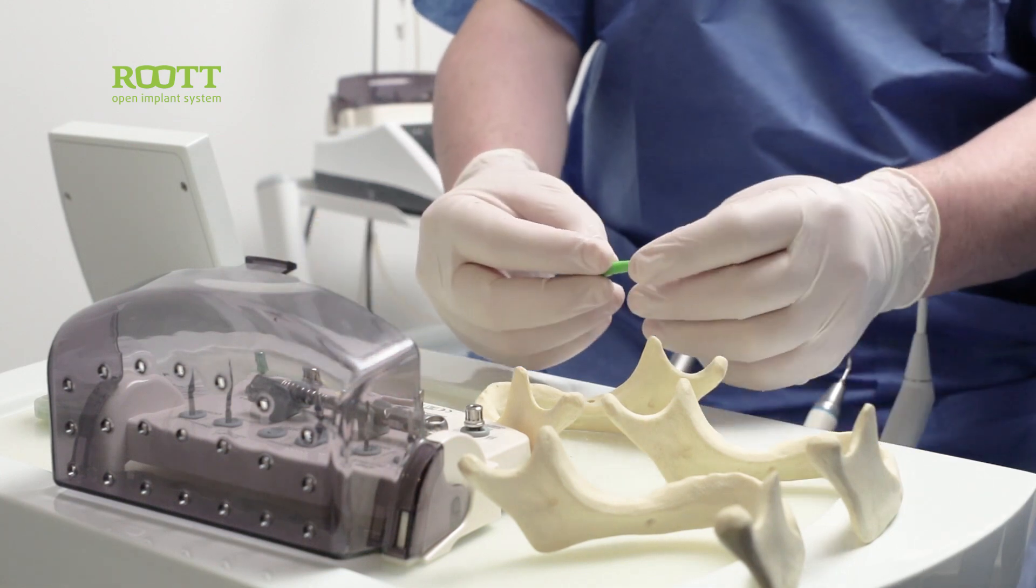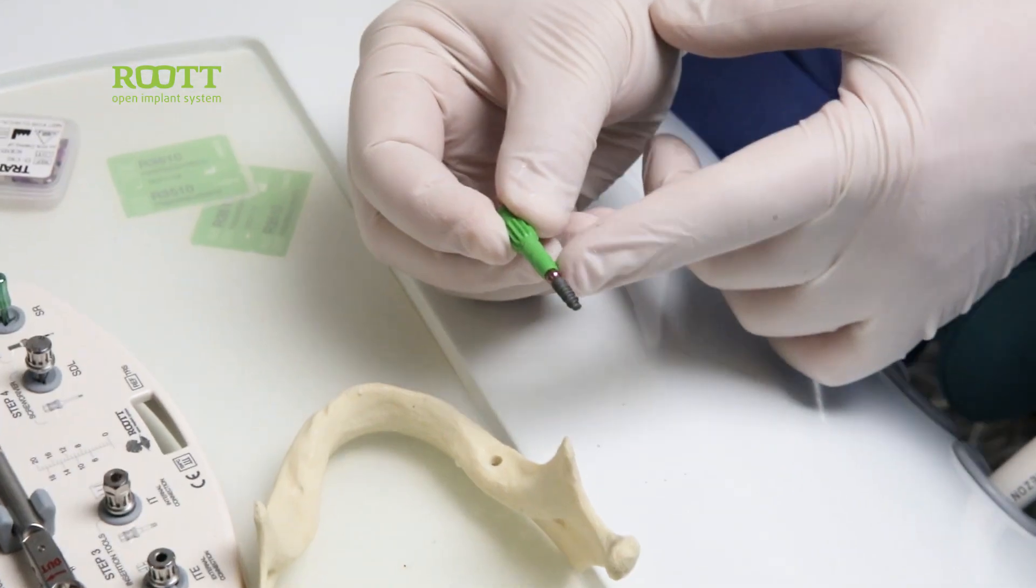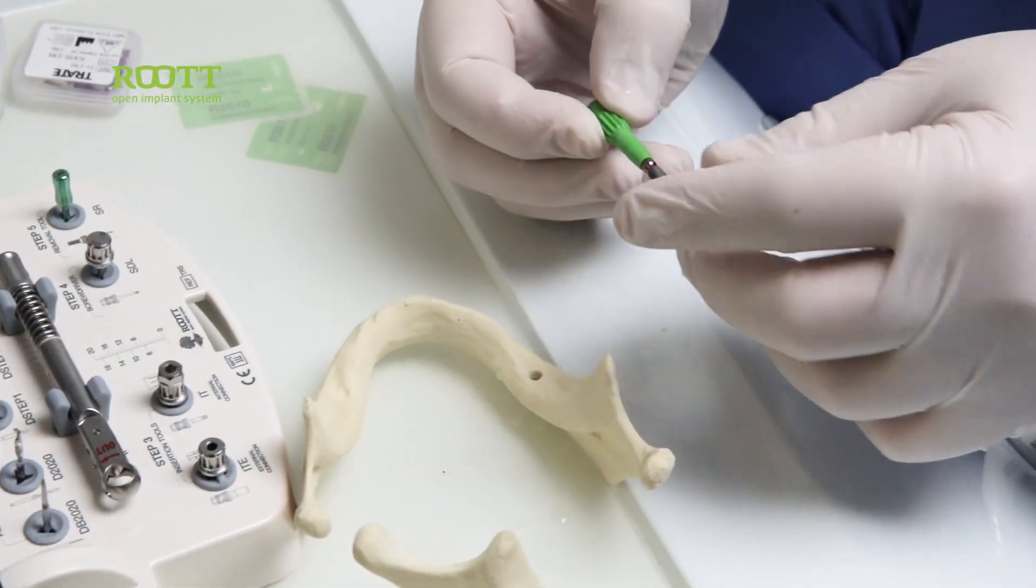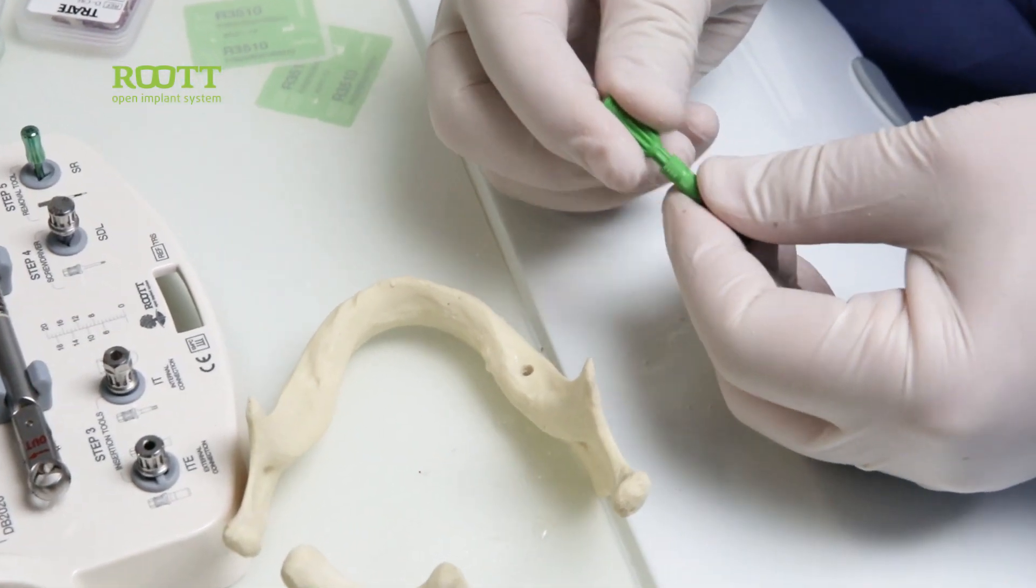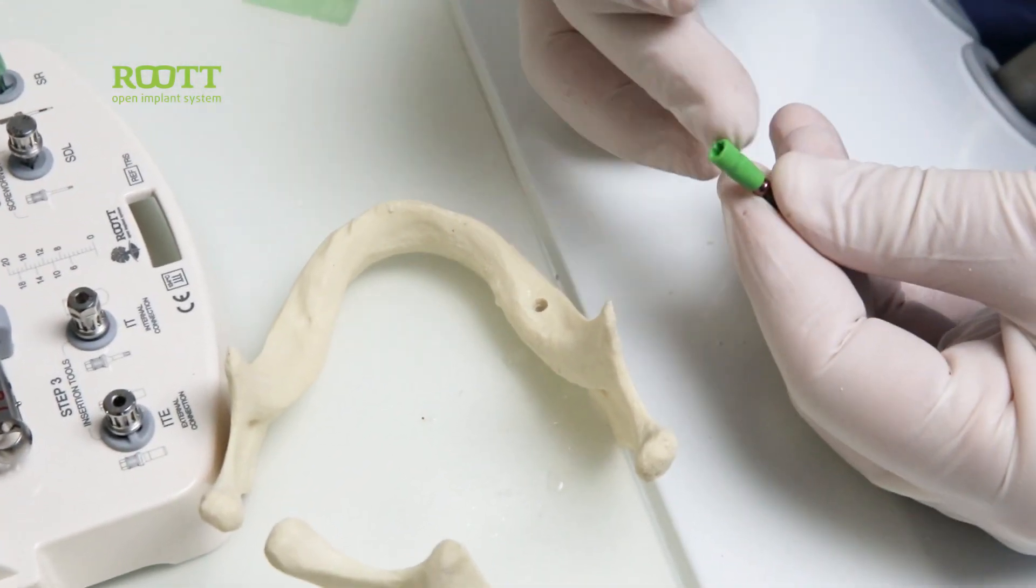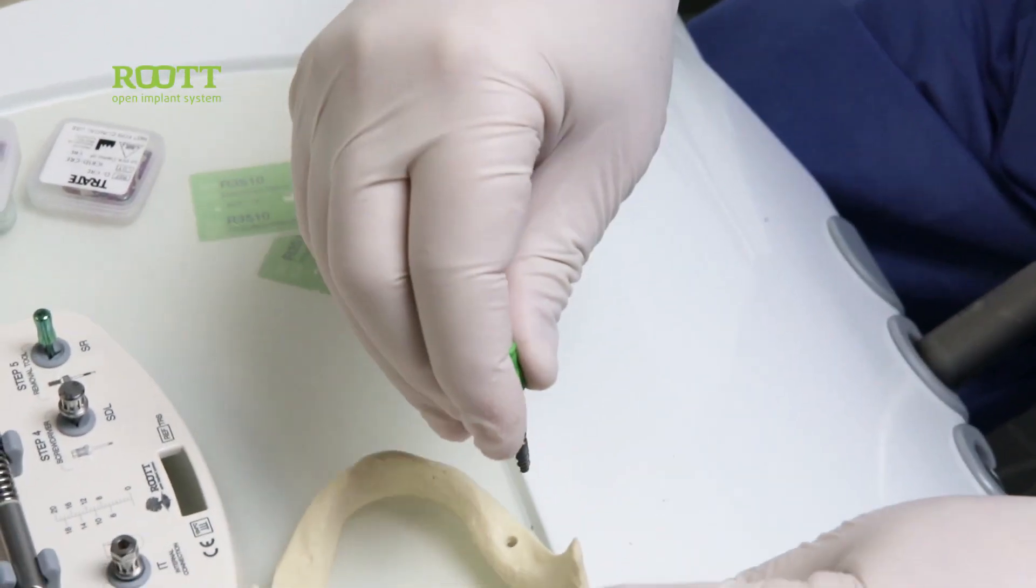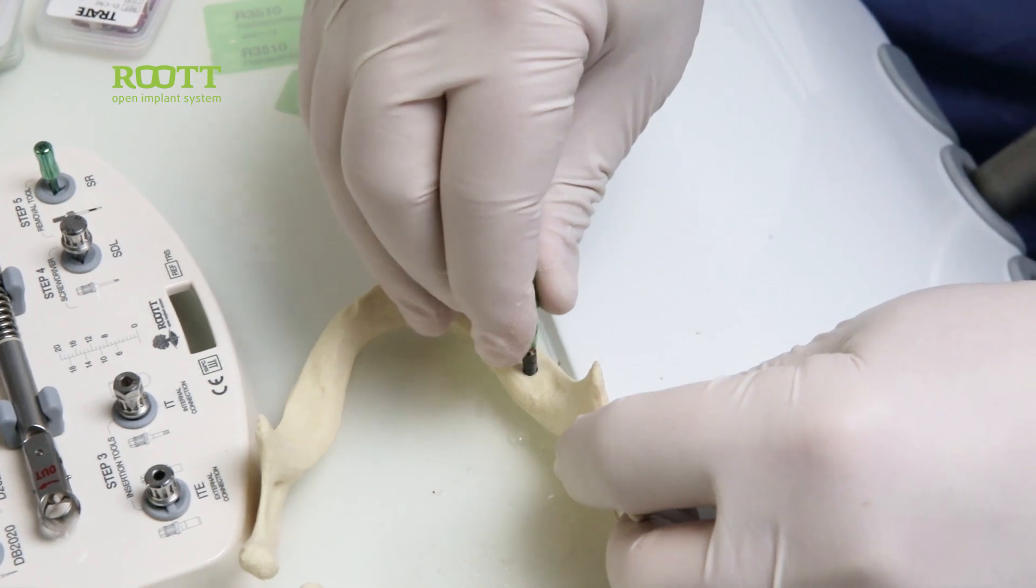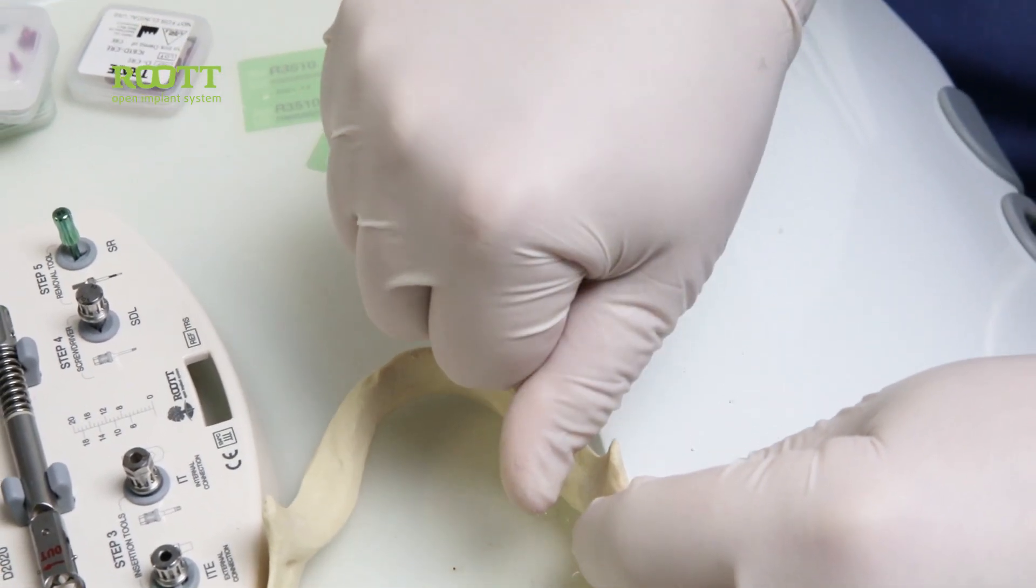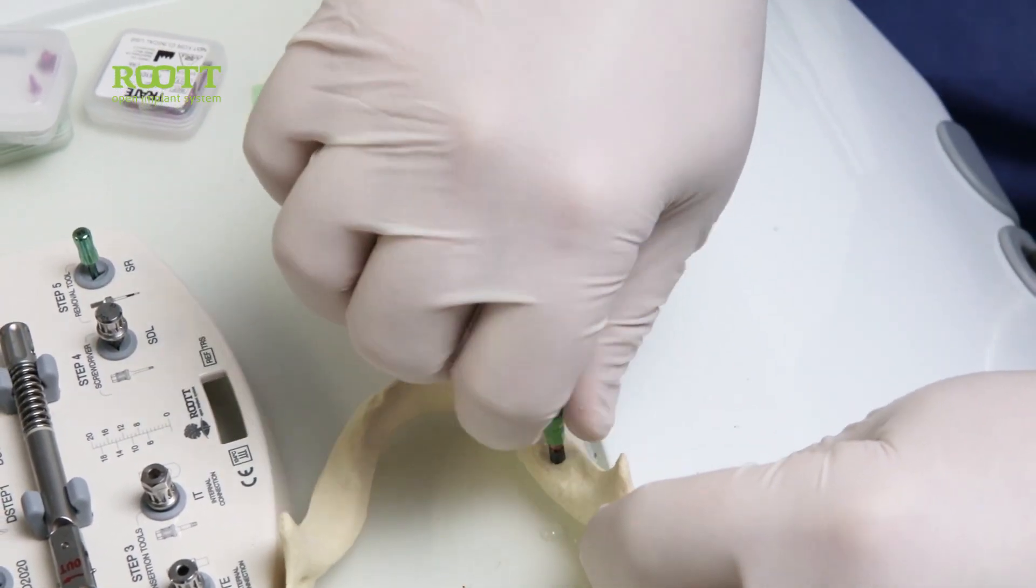Then we place the implant. The implant, we receive the implant with the abutment and the holder. The holder can be divided on two if we have small mouth opening. So we place the implant first manually, we turn until we cannot turn anymore.